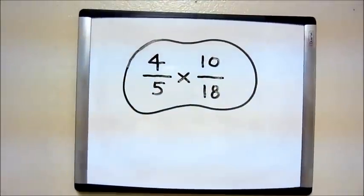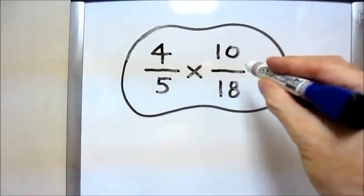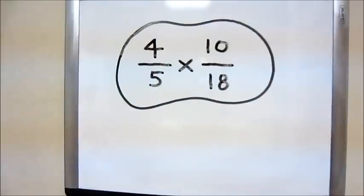Sometimes we're able to cross-cancel both numerators and denominators. In the problem 4/5 times 10/18, we could do this.